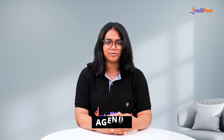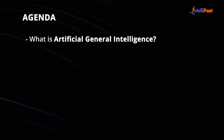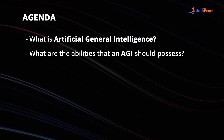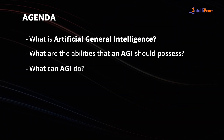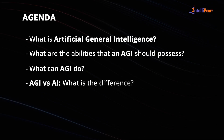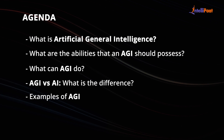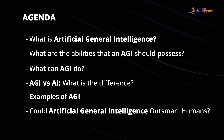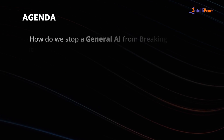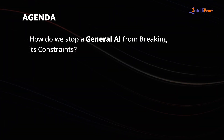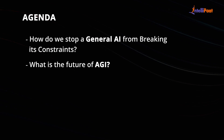It's a fascinating and complex topic that has captured the imagination of scientists, philosophers and tech enthusiasts alike. Let us quickly dive into the agenda for this video. First, we'll talk about what is Artificial General Intelligence. Then we'll move on to the abilities that an AGI should possess, what an AGI can do, a comparison of AGI versus AI, examples of AGI, whether AGI could outsmart humans, how to stop a general AI from breaking its constraints, and finally the future of AGI.